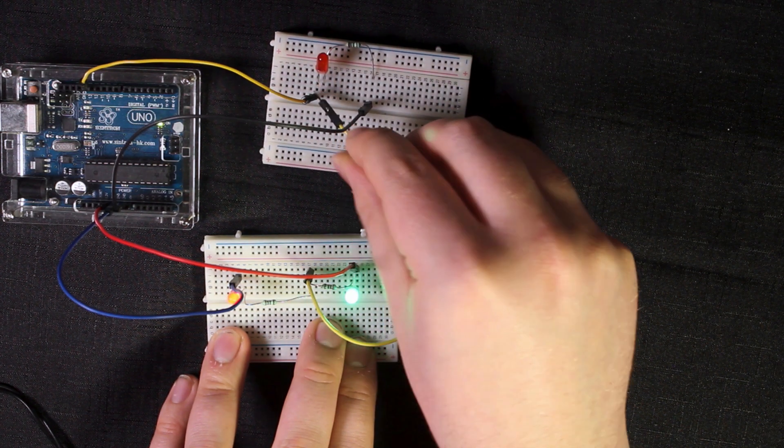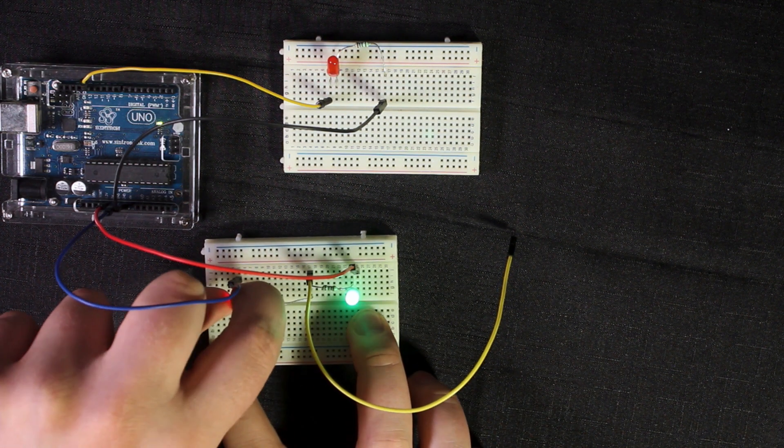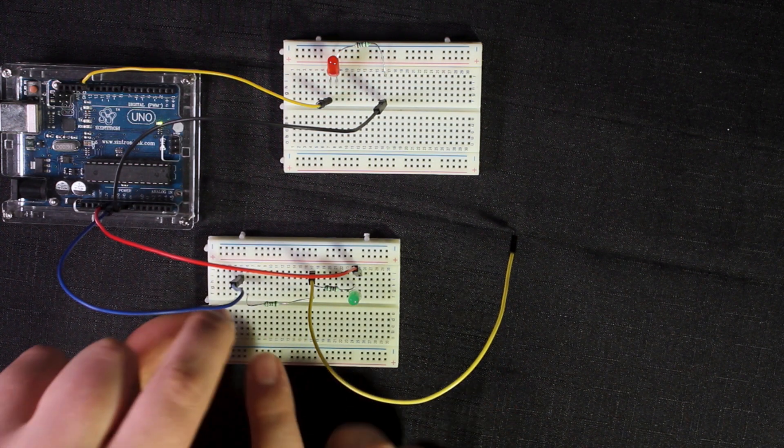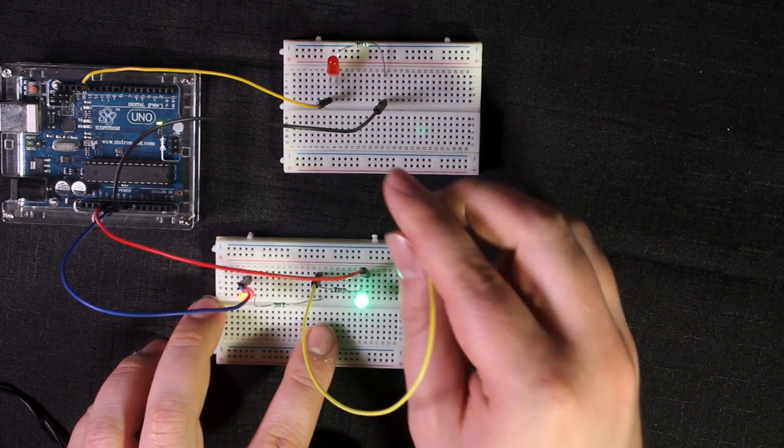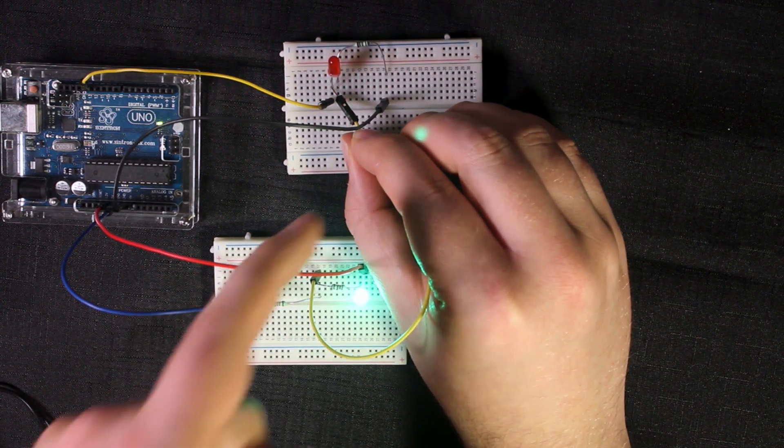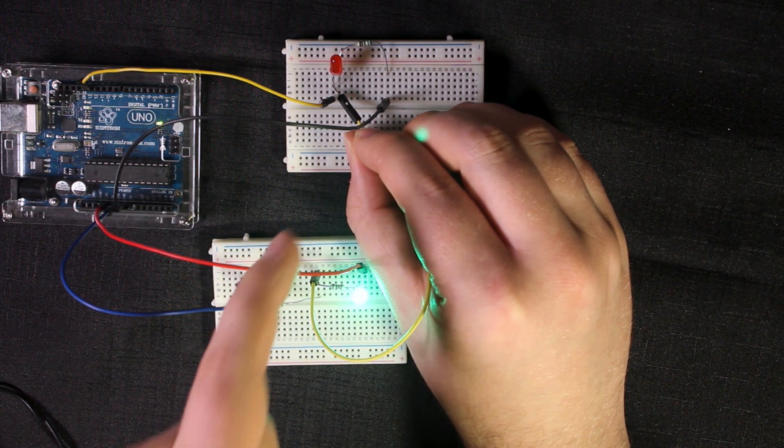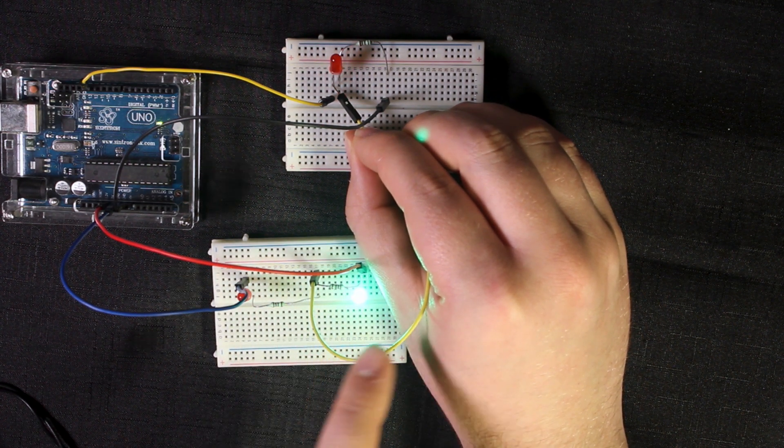This is because we have the positive leg on the resistor and the negative leg over here. When this is positive, power is coming down here through and down there, and when it is negative, it is allowing power to come through here, through this LED, and down the probe.